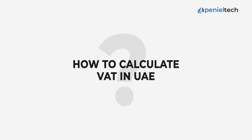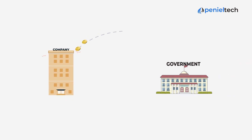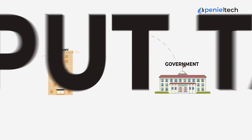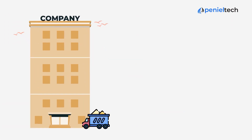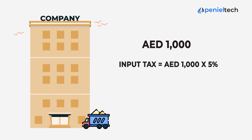Now, let's get to the important question of how to calculate VAT in UAE. Input tax is the tax on the raw supply items from the supplier paid by the company to the authorities. So, if a company is buying wholesale goods and raw materials for 1,000 dirhams, then the input tax would be 1,000 dirhams multiplied by 5% VAT, which equals 50 dirhams as the input tax.